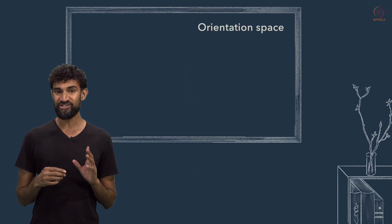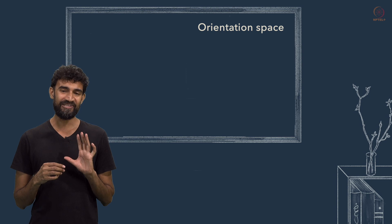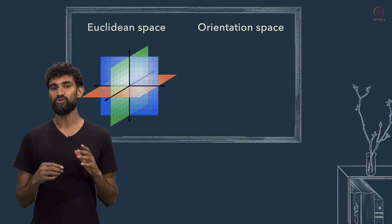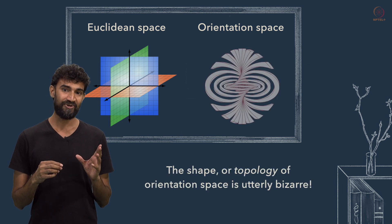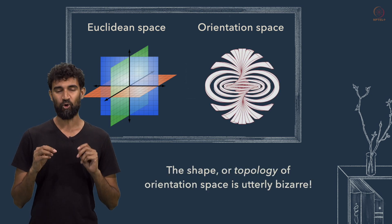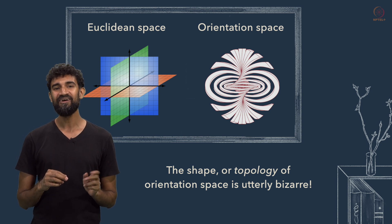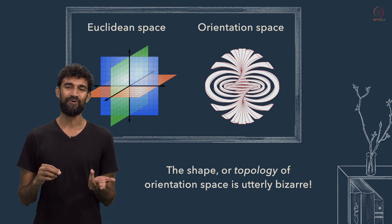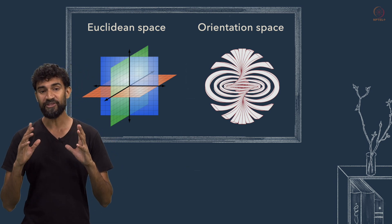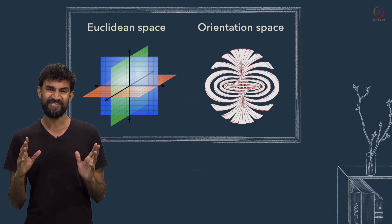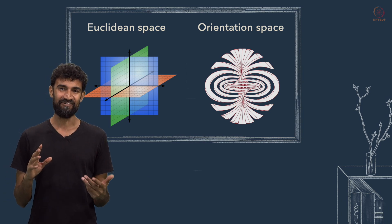A three-dimensional space that is completely different from the Euclidean space we're used to thinking about. In fact, the shape, or topology of orientation space, is utterly bizarre, with properties that initially sound downright impossible. And yet, we'll discover that our bodies already have a deep, visceral understanding of it.